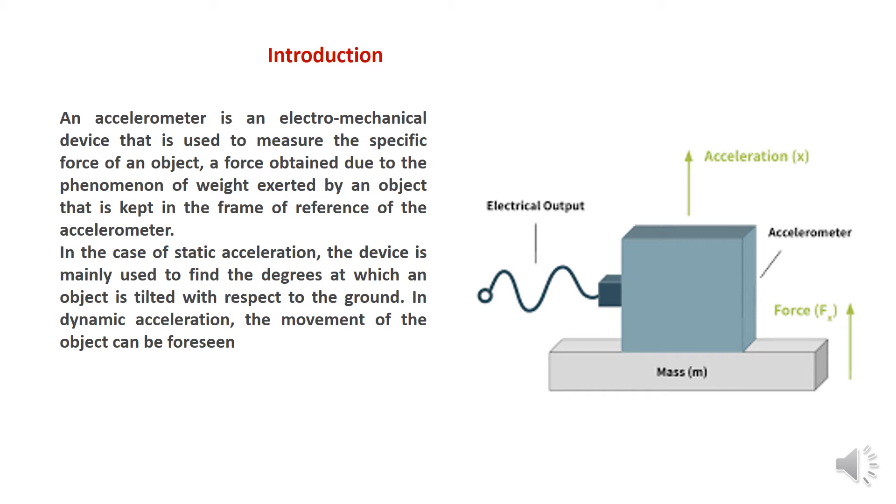If we are able to find acceleration, then by multiplying the mass of the object, we can determine the force exerted on the body. So, in the case of static acceleration, the device is mainly used to find the degree at which an object is tilted with respect to the ground. In dynamic acceleration, the movement of the object can be foreseen.